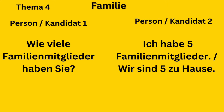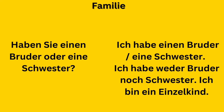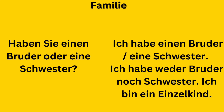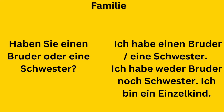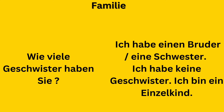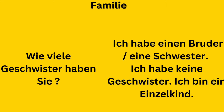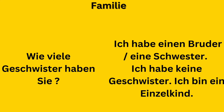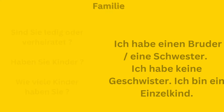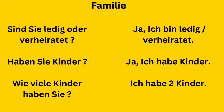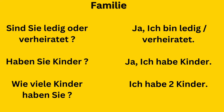Now we have Theme 4 (Familie). You can ask: Wie viele Mitglieder haben Sie? Answer: Ich habe fünf Mitglieder, or Wir sind fünf zu Hause. You can also ask about siblings: Haben Sie einen Bruder oder eine Schwester? Answer: Ich habe einen Bruder oder eine Schwester, or Ich bin ein Einzelkind — I am an only child, I have no siblings. Or: Wie viele Geschwister haben Sie? Answer: Ich habe einen Bruder, or Ich habe keine Geschwister, ich bin ein Einzelkind.